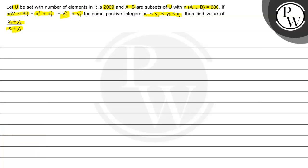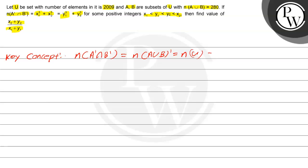Let's start the solution. To solve this question, the key concept is: n(A'∩B') is equal to n((A∪B)') which is equal to n(U) minus n(A∪B).